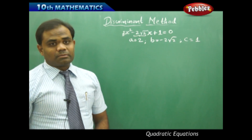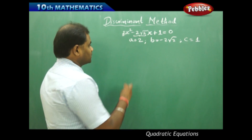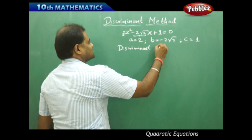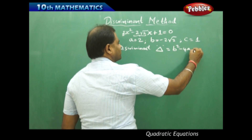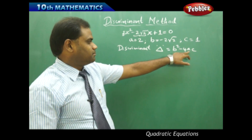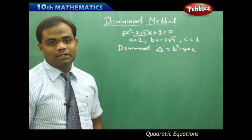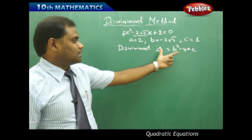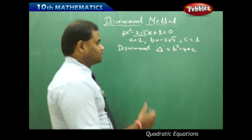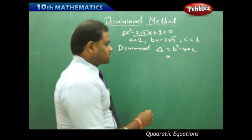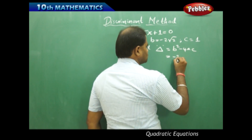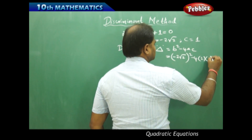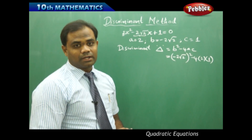To find the roots using the discriminant method, we first need to find the discriminant delta. The discriminant delta is given by the formula b squared minus 4ac. We substitute the values of a, b, and c into this expression to get the value of delta. Finding delta is a very important first step in the discriminant method. Substituting our values: b is minus 2 root 2, so we compute minus 2 root 2 whole squared, minus 4 times a times c, which is 1.